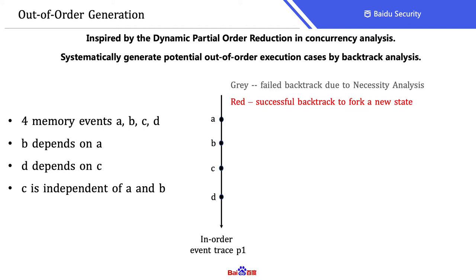The out-of-order generation is the core component of our method. I will use an example to explain the high-level idea. Here we have an in-order event trace P1 that consists of four memory events A, B, C, and D. We assume that B depends on A, D depends on C, and C is independent of both A and B. Let's begin with P1. Each time, at a memory event, we use the out-of-order generation to start a backtrack analysis. The first event is A; the backtrack fails quickly because there are no events before A. Going to the second event B, the backtrack also fails because B depends on A.